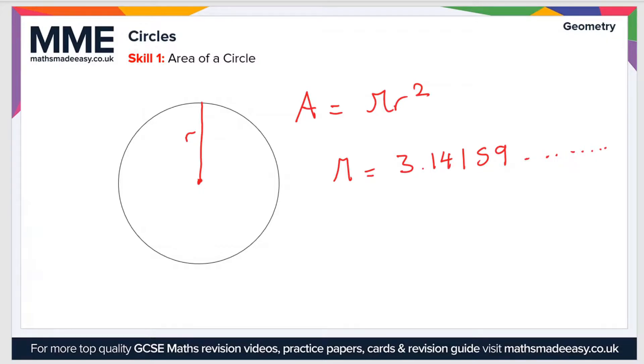You will be told what value of pi to use in the question, or you can use the value that is stored in your calculator. So then to calculate the area we just do area is pi times the radius squared.